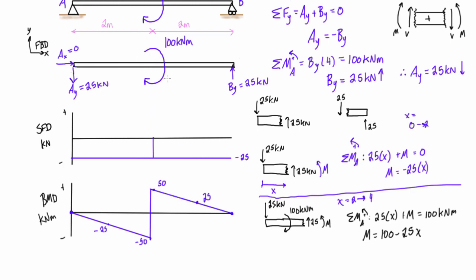When you see an applied moment on a beam like this, the shear force diagram stays continuous, but the bending moment diagram will have a discontinuity — very similar to how a point force causes a discontinuity in the shear force diagram. Here the applied moment causes a discontinuity in the bending moment diagram, jumping from negative 50 to positive 50 — a jump of 100 kN·m. Then the area analogy still holds: negative area of 25 times 2 brings the bending moment down by 50, going linearly from positive 50 down to zero. The area analogy holds — just watch out for these discontinuities.